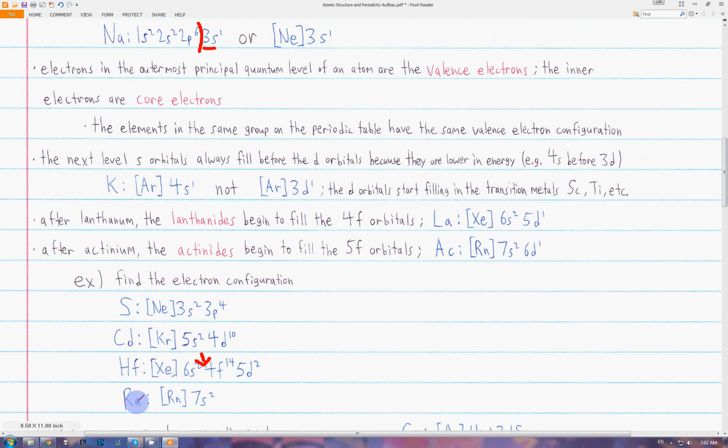Last we have radium. The closest noble gas is radon, which is in the 6p6 subshell. We go down one. Francium and radium will be the 7s2. Notice how the 7s block is the last block. There is no 7p orbitals.